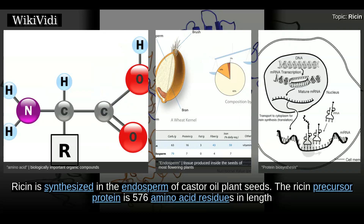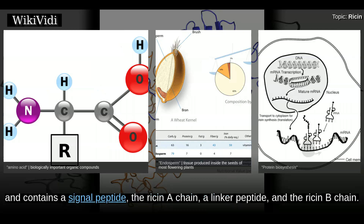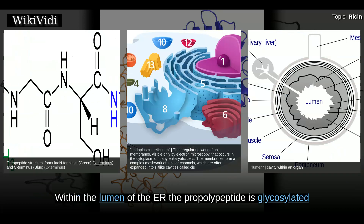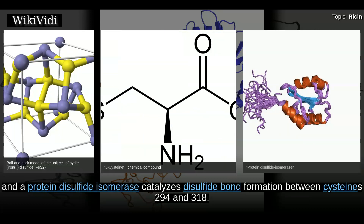Ricin is synthesized in the endosperm of castor oil plant seeds. The ricin precursor protein is 576 amino acid residues in length and contains a signal peptide, the ricin A chain, a linker peptide, and the ricin B chain. The N-terminal signal sequence delivers the pre-propolypeptide to the endoplasmic reticulum, and then the signal peptide is cleaved off.